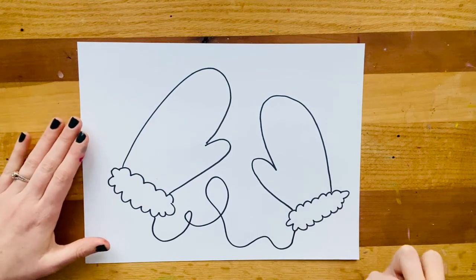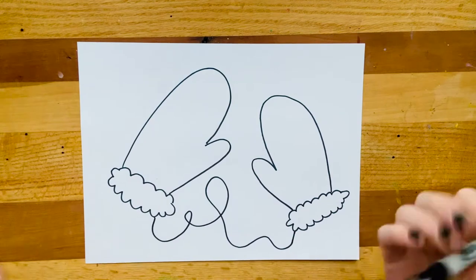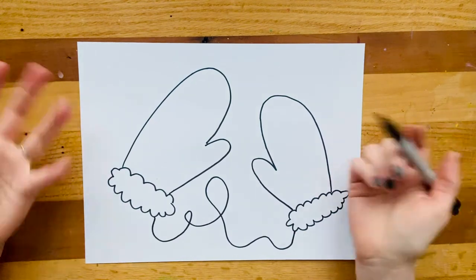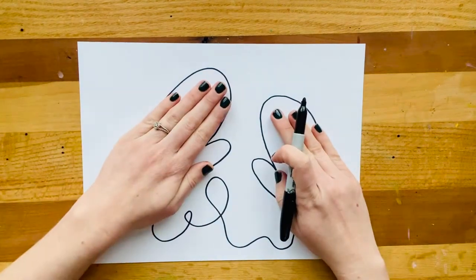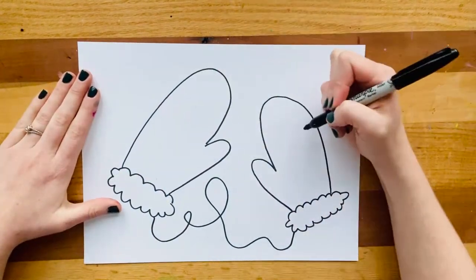Then we're going to practice some patterns. Now, as you know, a pattern is something that repeats. So as long as it happens over and over again, it can be a pattern. And sometimes today when we're making our mittens, we're going to try making them so that what I do on one happens on the other.